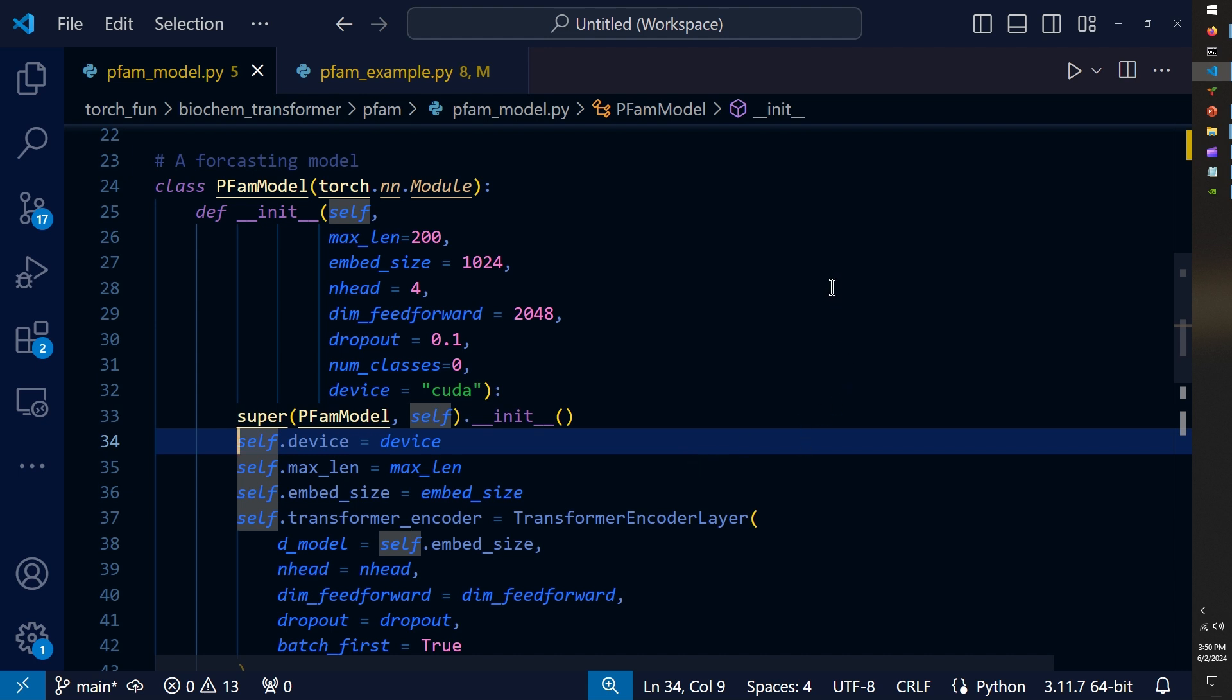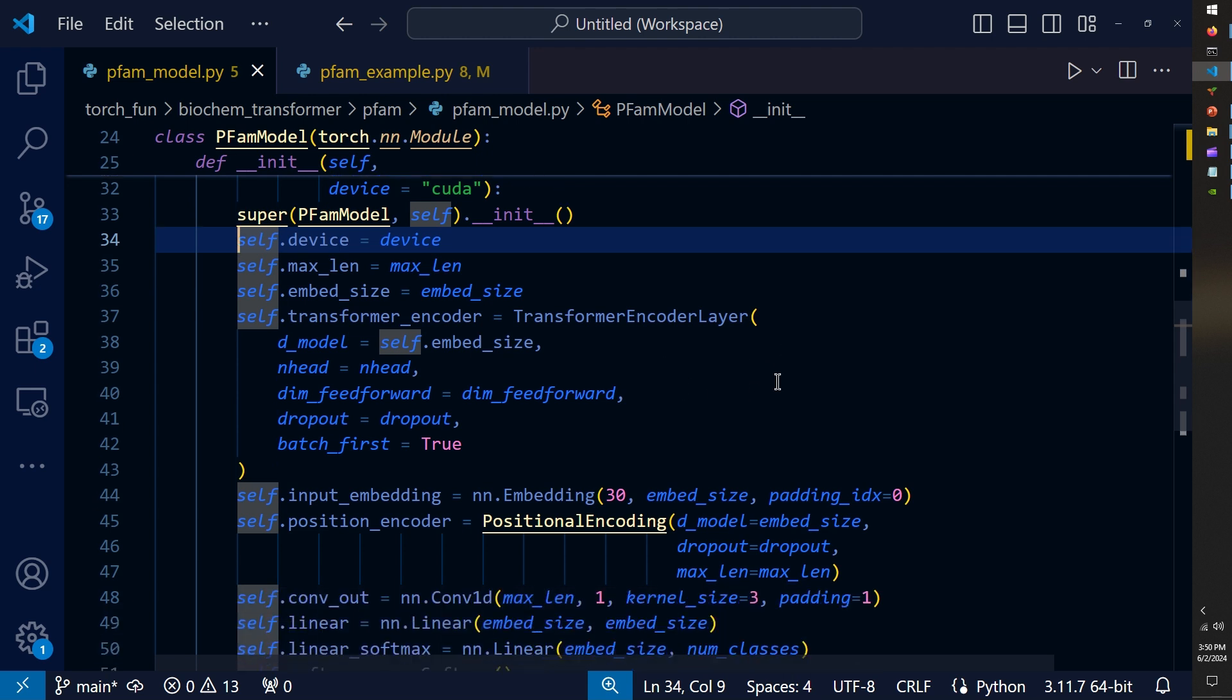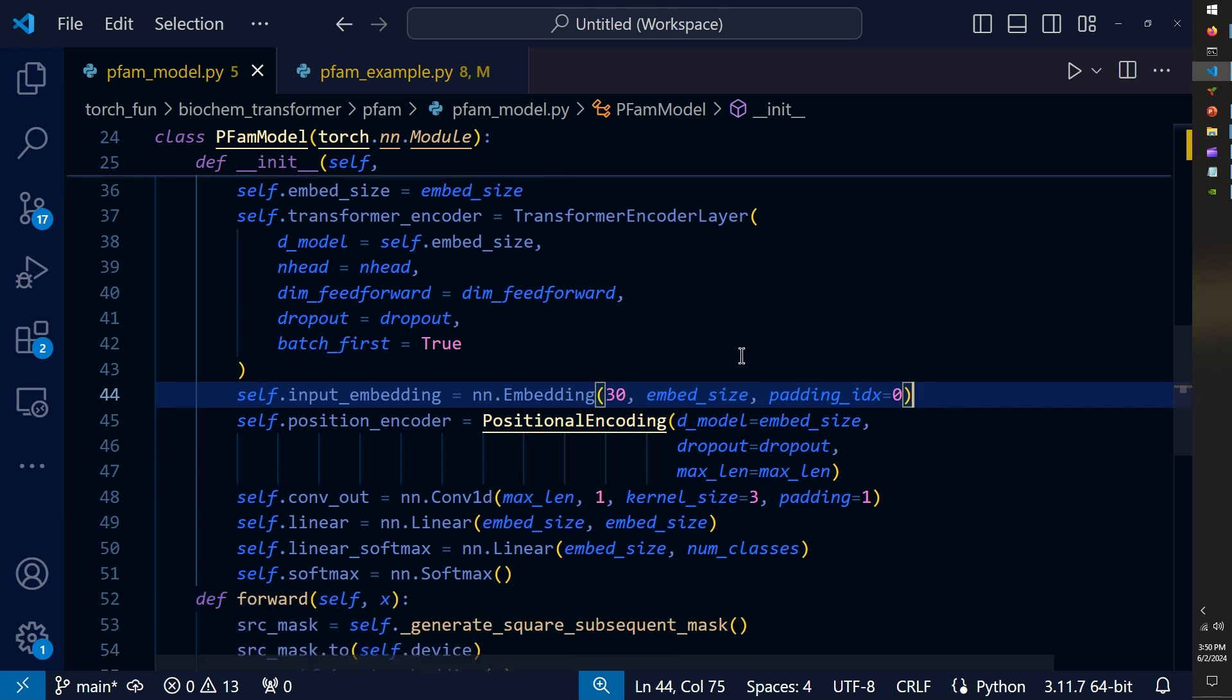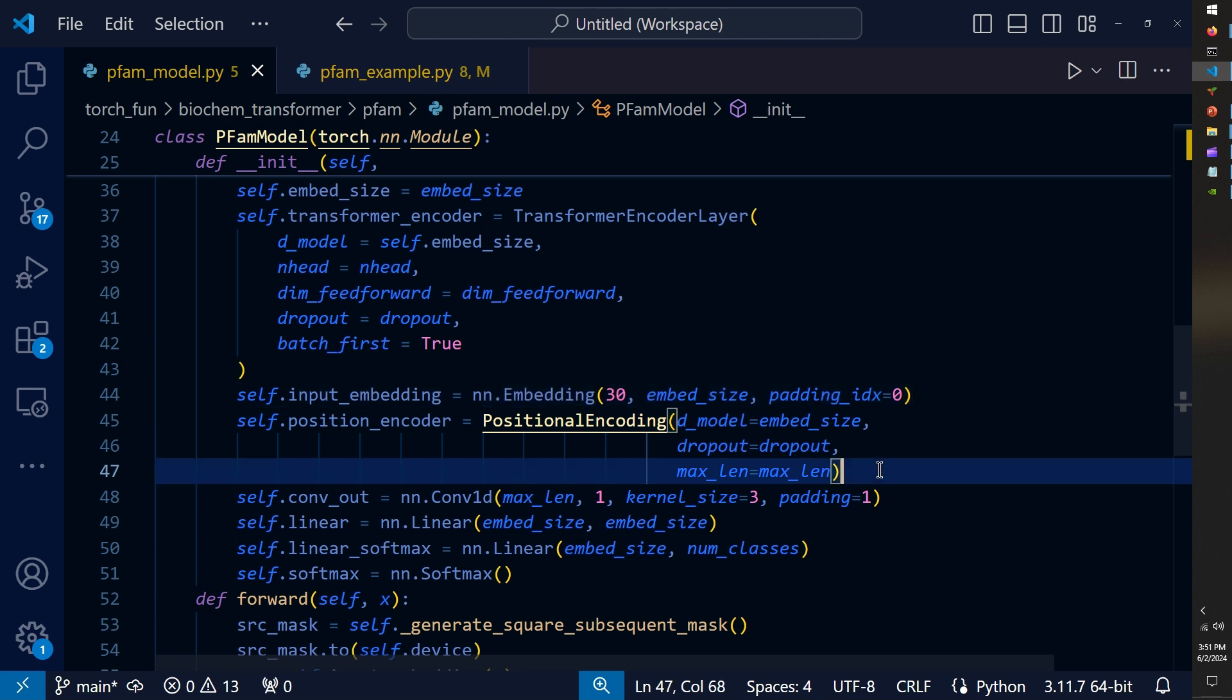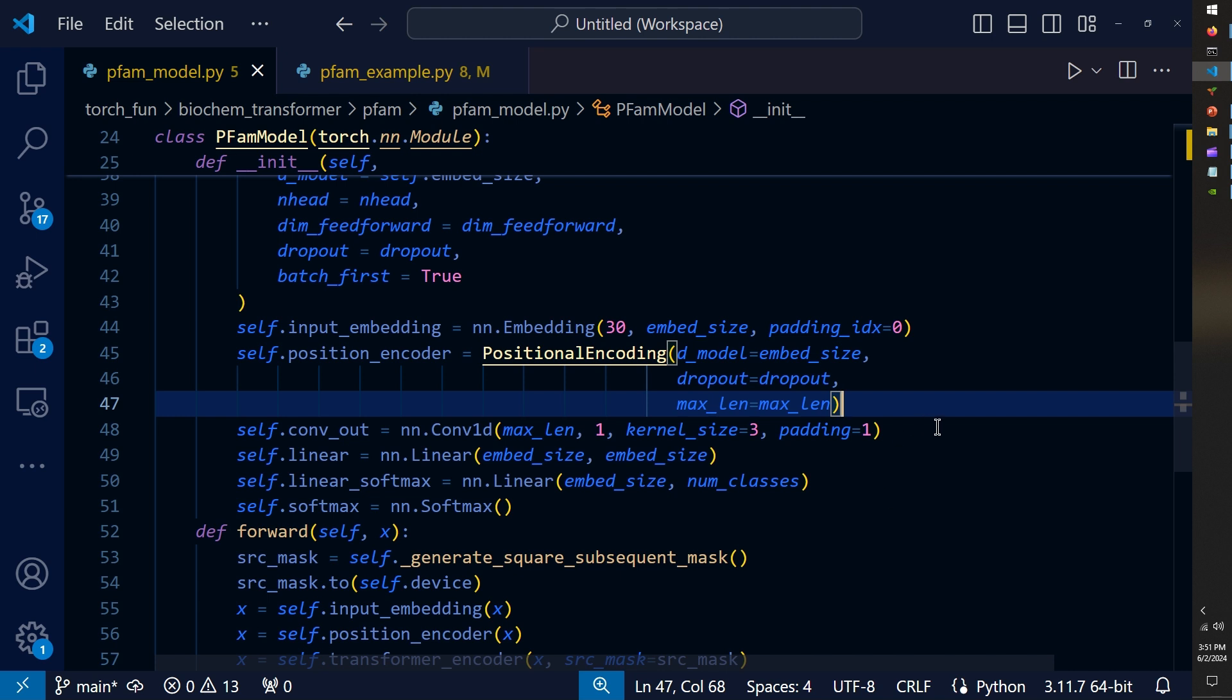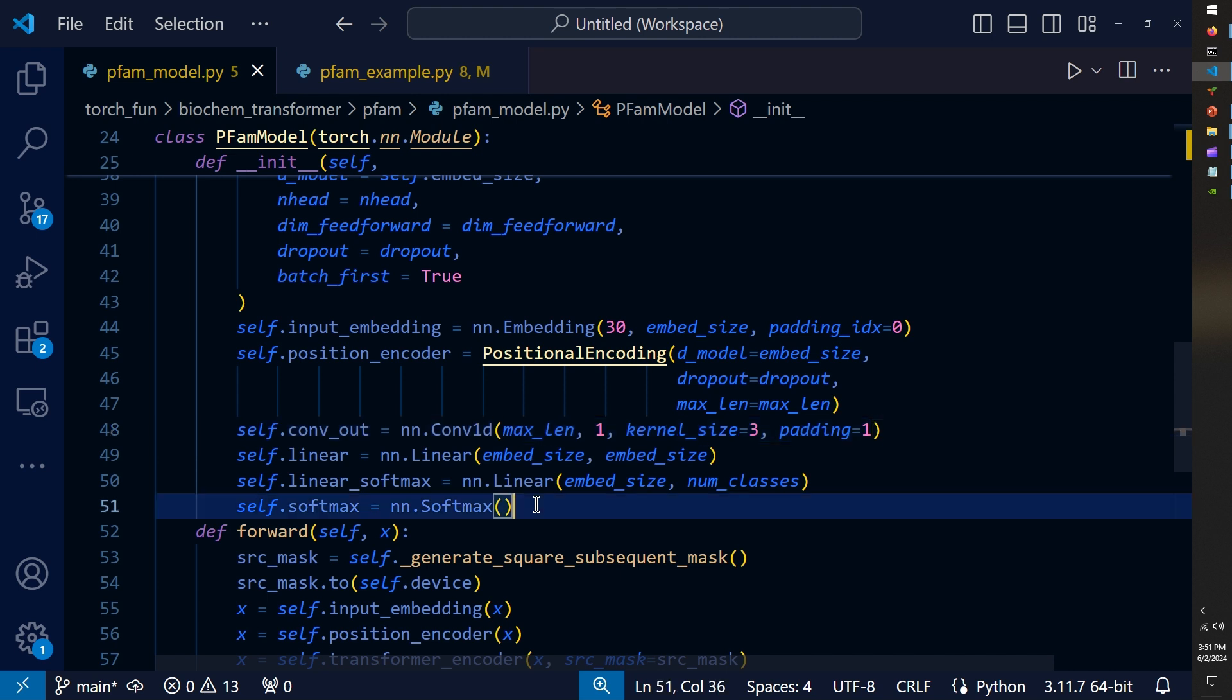Upon doing this, I define all of our model components. So I take the transformer encoder layer, which is a single transformer encoder imported from PyTorch, initialized with its own hyperparameters. Then I define our input embedding as a simple PyTorch embedding layer, where our dictionary of tokens is of size 30, which I'll show in the script class. Then I create an instance of that positional encoding class for our positional encoder. And then I apply our regression components using the PyTorch 1D convolutional layer and some linear layers with the final softmax activation.